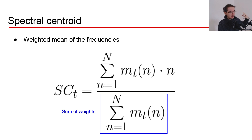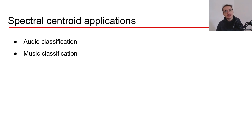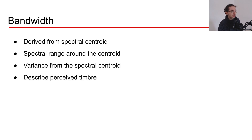The spectral centroid has been extensively used in audio and music classification problems. It is one of the key frequency domain audio features and has been widely used across many different applications.